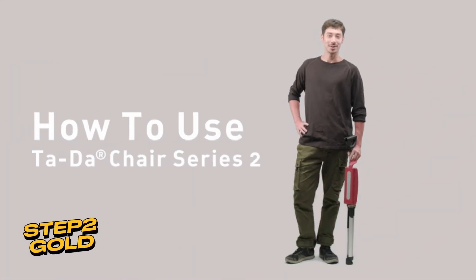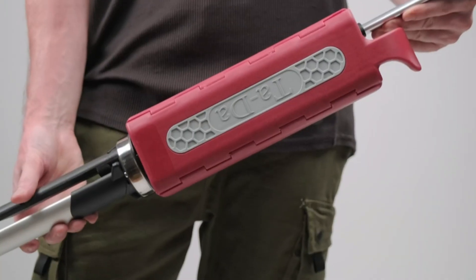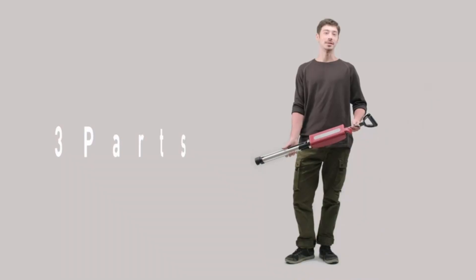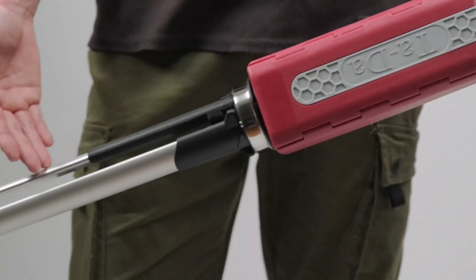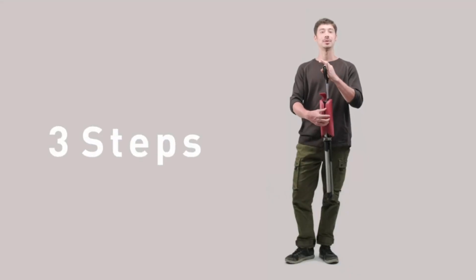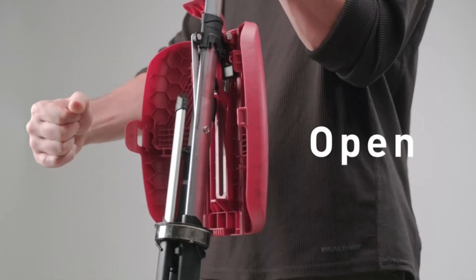Step to Gold. Meet your perfect companion, the Step to Gold Tata to Chair Series. It's more than just a trekking pole, it is a foldable walking stick with seat. Use it as a trekking pole to conquer difficult trails, providing you with stability and balance.